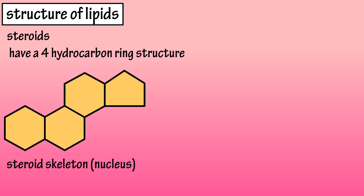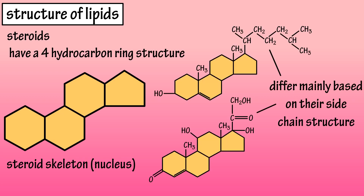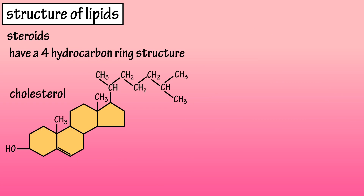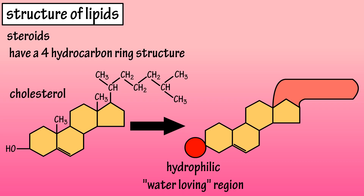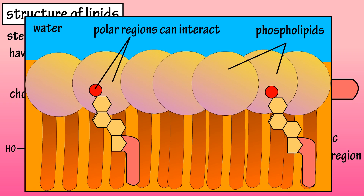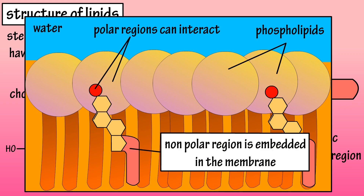Steroids, which are often referred to as sterols, have a 4-hydrocarbon ring, or steroid nucleus, as the foundation of their molecules. Steroids differ based on the side chains extending out from their rings. Cholesterol, whose molecular model is shown here, is an important steroid, as it has a hydrophilic, water-loving polar region at the hydroxyl OH end of the molecule, and a hydrophobic, water-fearing non-polar region at its hydrocarbon chain. Cholesterol is a key part of cell membranes, as its polar region can interact with the polar region of phospholipids, and its non-polar region is embedded in the membrane alongside the non-polar fatty acids of the phospholipids.